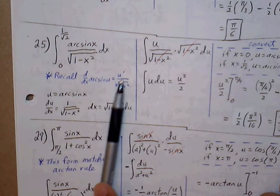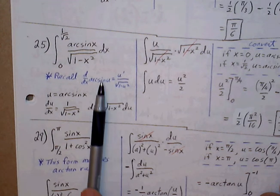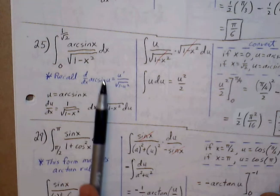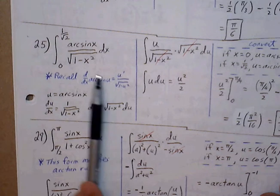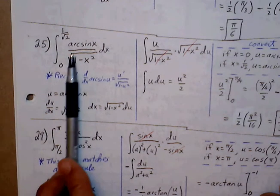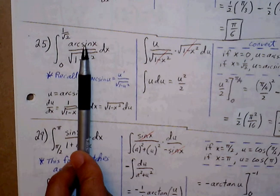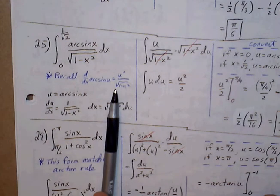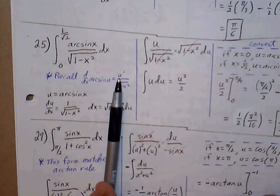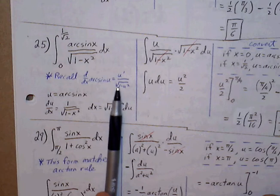If we let the u value be arctan(x), then the derivative will most likely be the form that cancels out with the denominator. So let's try that: u = arctan(x). The derivative is u′ over √(1 − u²), where u is x, so the derivative of x is 1 over √(1 − x²).